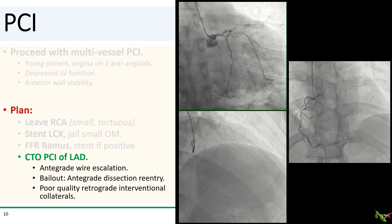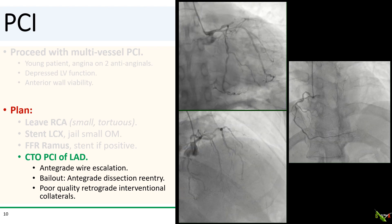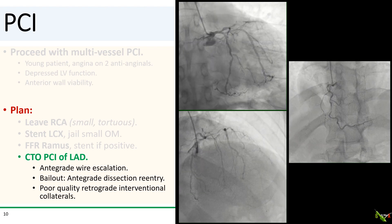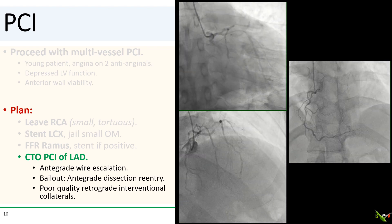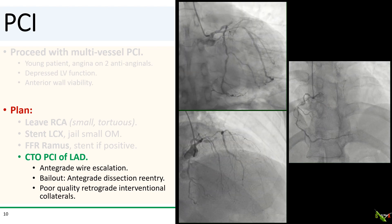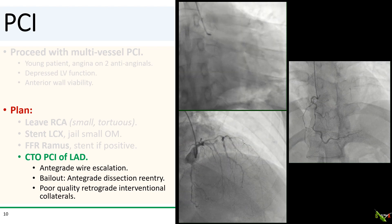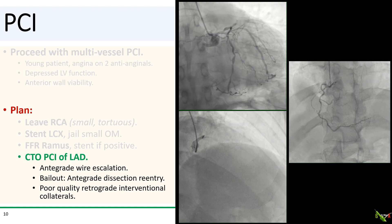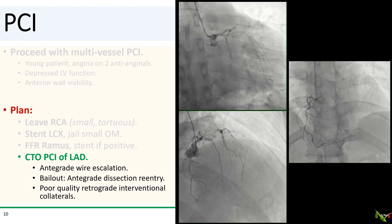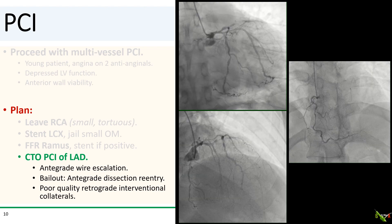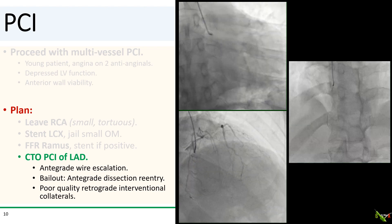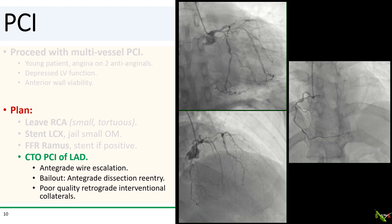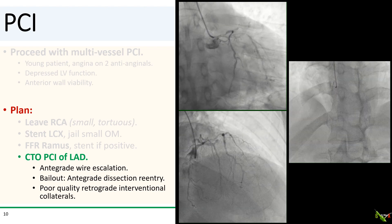For the CTO, we're going to start with anterograde wire escalation. With very few exceptions, I always start with anterograde wiring, and more often than not you're going to cross. If we do end up dissecting, the bailout will be anterograde dissection re-entry. The RCA collaterals were very small, tortuous, and epicardial — all red flags — so we didn't think the retrograde approach was really going to be feasible. We also did not think we needed Impella, as he was hemodynamically stable and his LV dysfunction was not particularly severe.